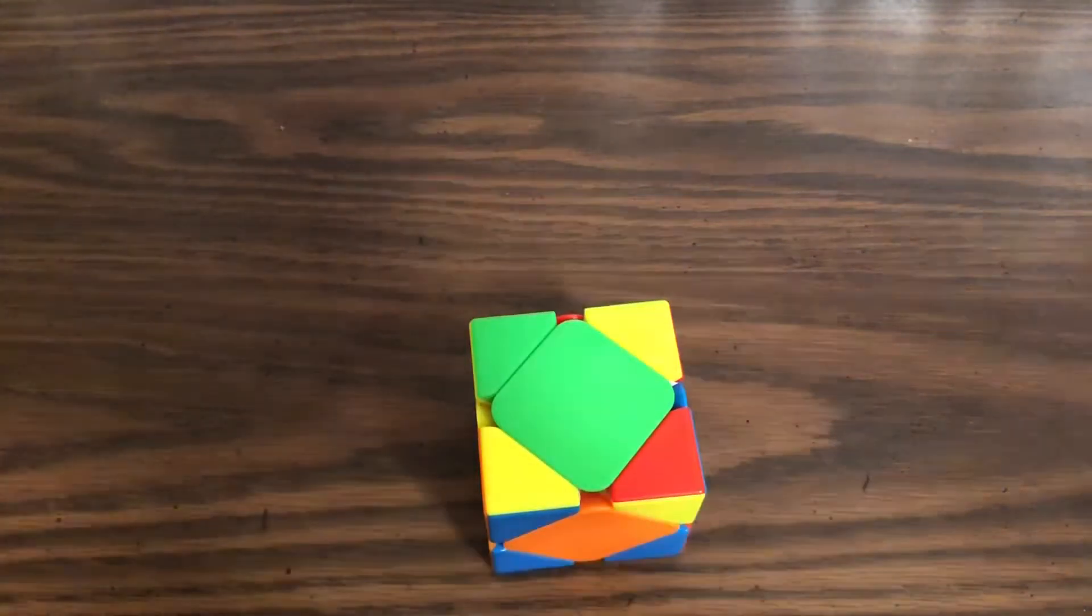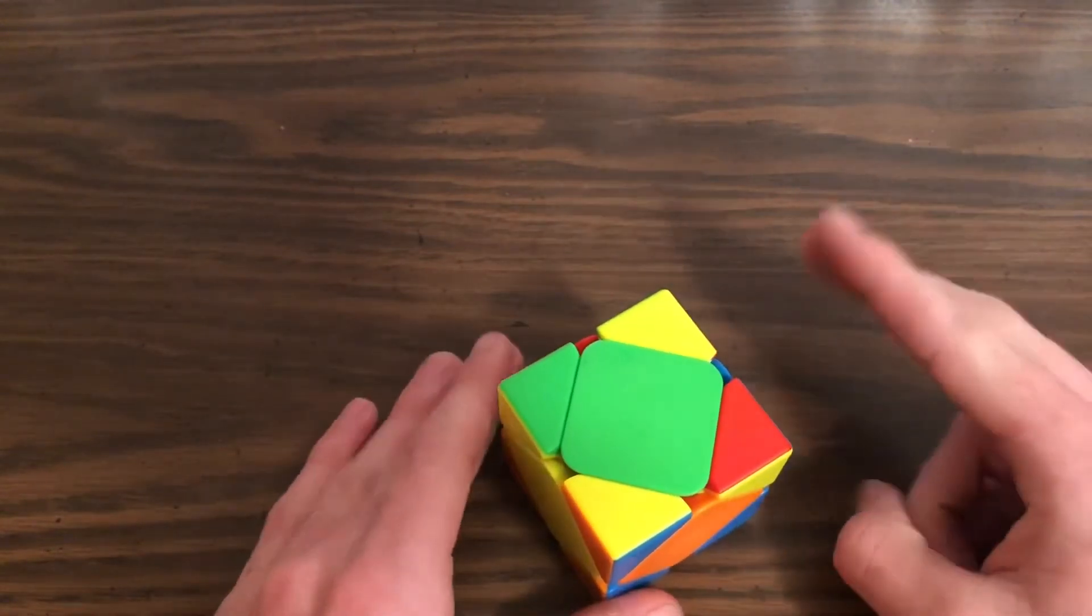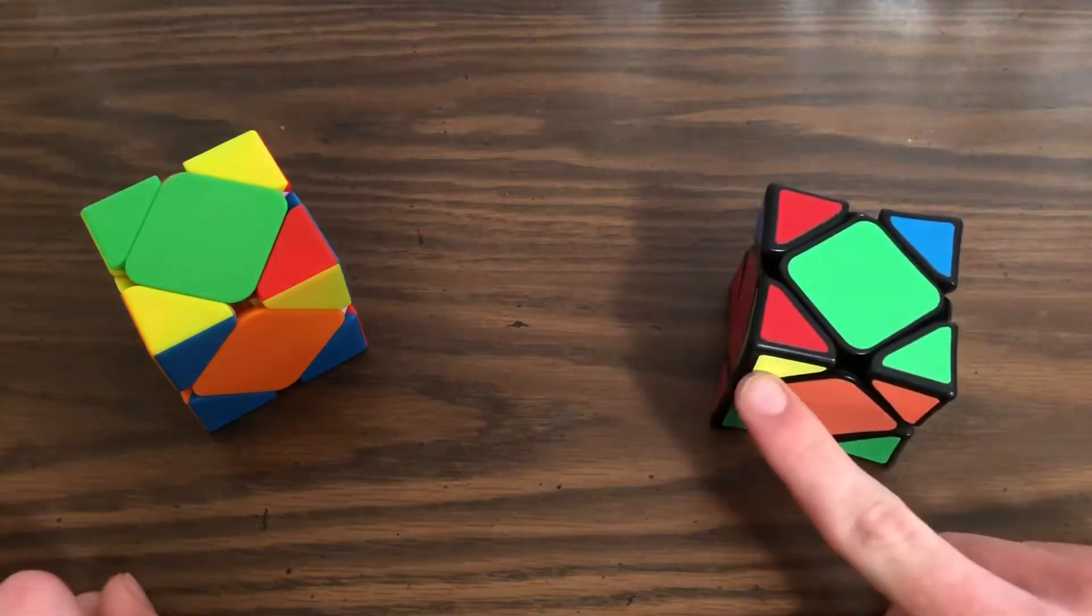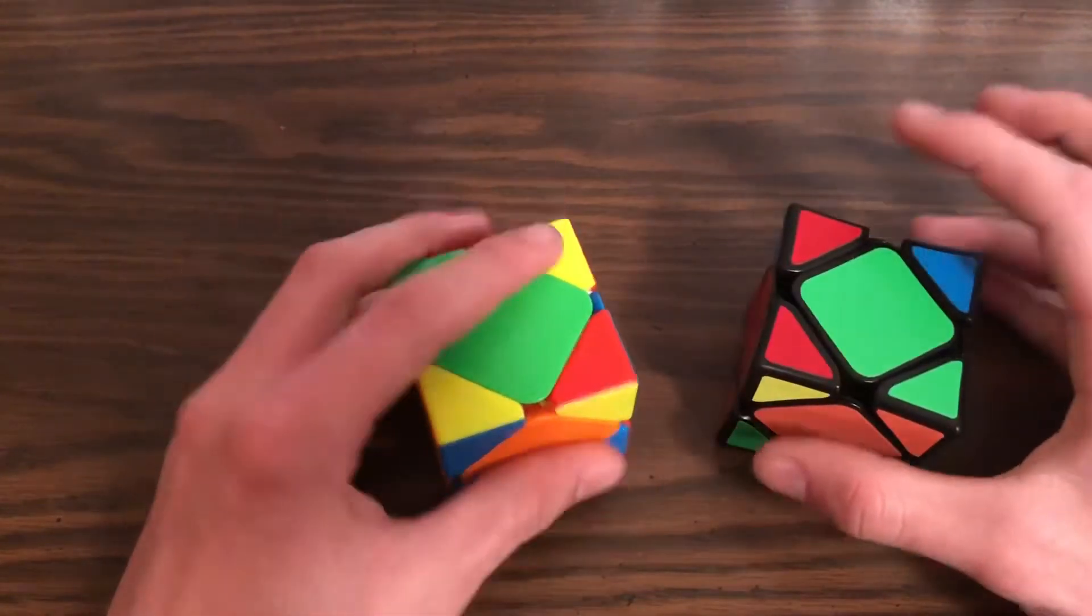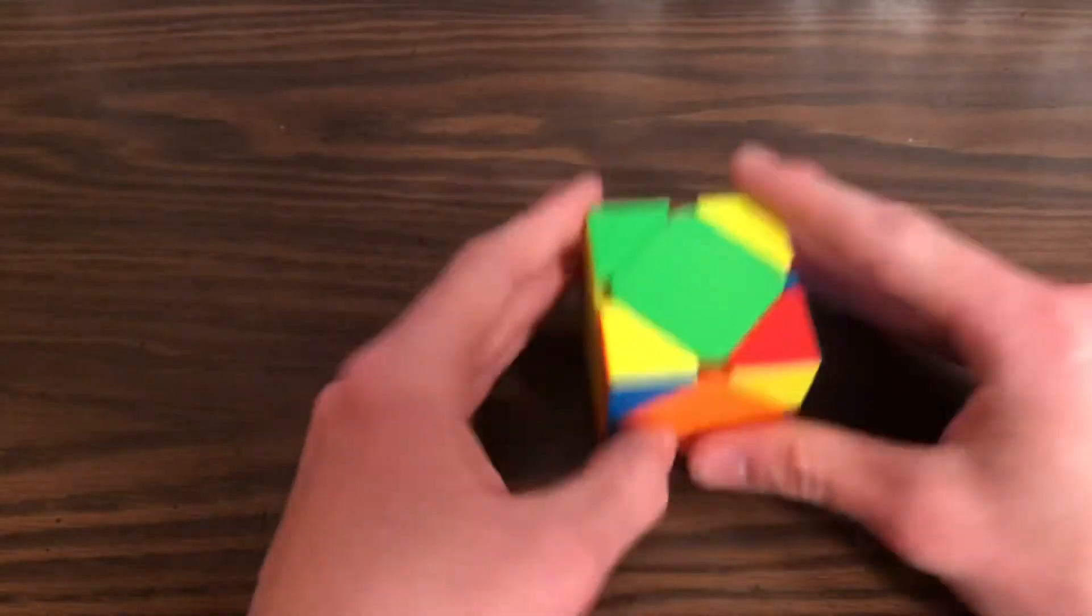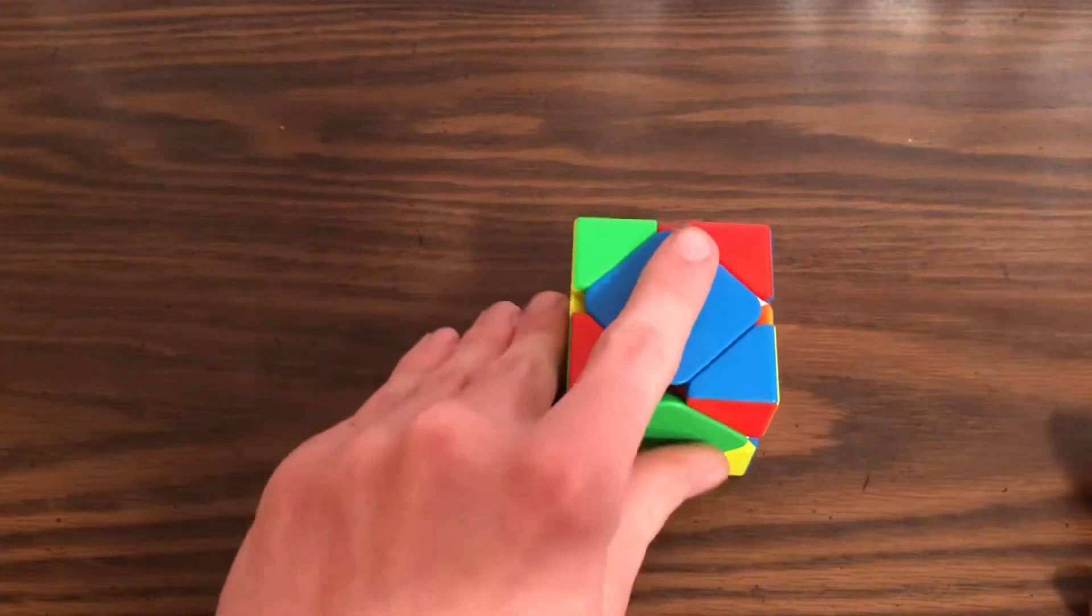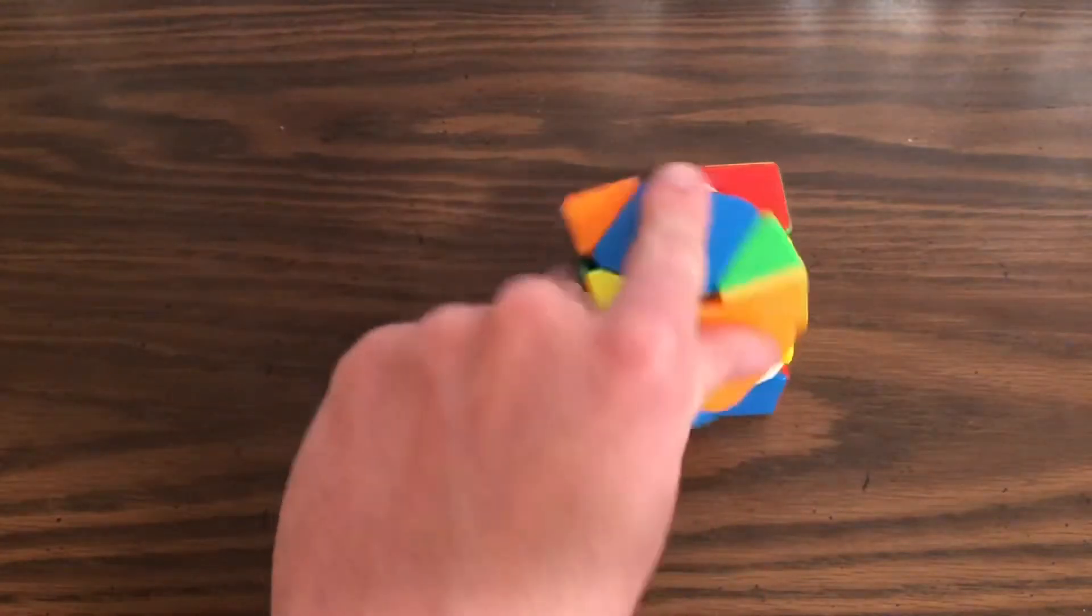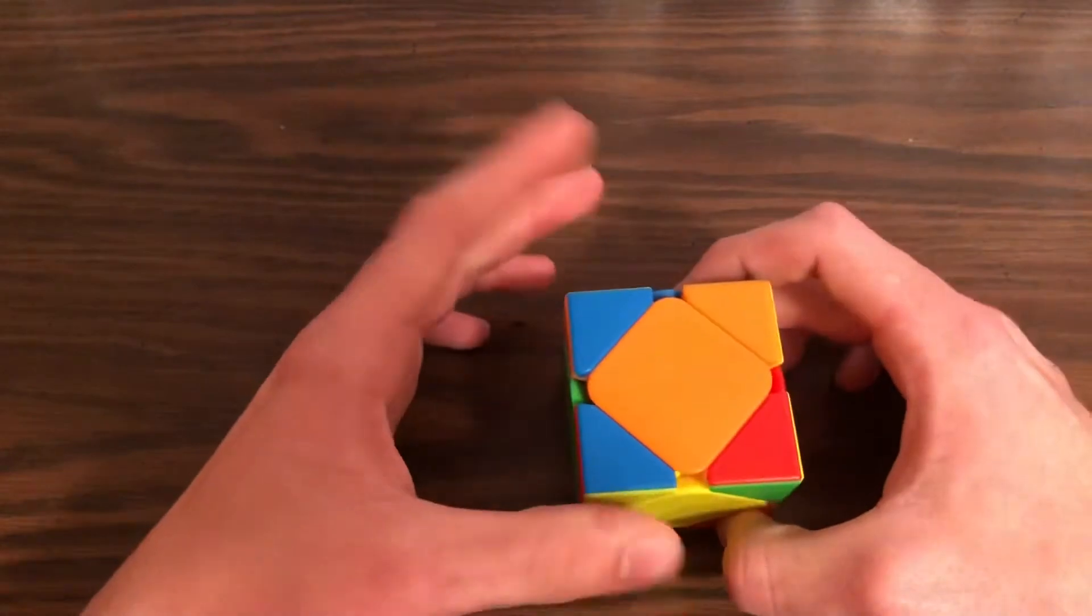The slightly more complex case you can get is this one where they're diagonal. This one actually requires that you do that algorithm not once but twice. How you do this one is unlike where on the last case we had the one on the left facing towards us, this one, the one we want to face us is the one on the right. You can see diagonal is on the right and nothing is on the left. Set your cube down on a table. Turn this corner down. Turn this corner down. Turn this corner up. And turn this corner up.